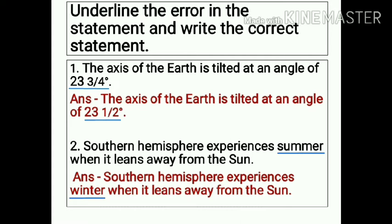Number 2. Southern hemisphere experiences summer when it leans away from the sun. The mistake here is 'summer.' The correct statement is: the southern hemisphere experiences winter when it leans away from the sun.